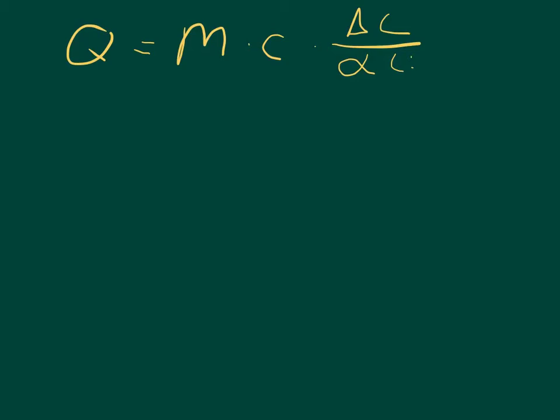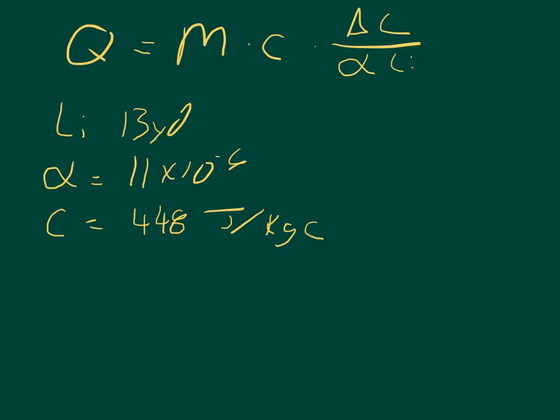The tricky part is in converting units because everything is absolutely ridiculous. So let's list what we know. We know that the initial length is 13 yards. We need that in meters. We know that the coefficient of thermal expansion is 11 times 10 to the negative 6. The specific heat is equal to 448, and that's joules per kilogram Celsius. And I'm letting you know that because that lets you know we need the units all in joules, kilograms, and Celsius whenever we start this. And alpha is in degrees Celsius to the negative 1, so we need degrees Celsius again.